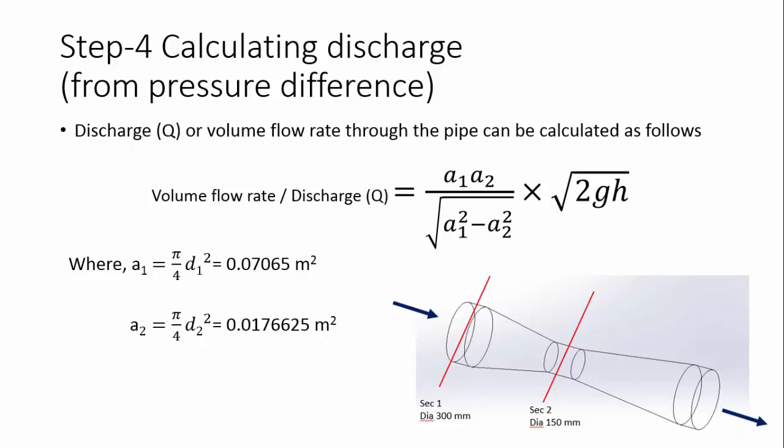If you substitute the diameter values in meters, use 0.3 meters and 0.15 meters for the inlet and throat diameters. Be careful with the unit conversions.